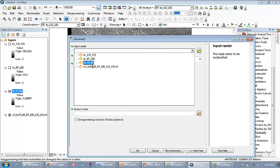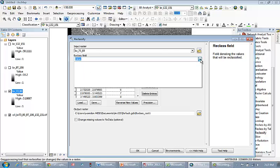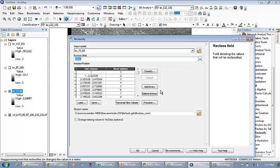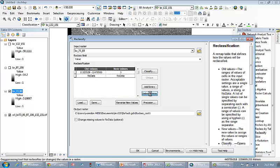Input raster is going to be the 7380. The reclass field is going to be value. That's our only choice. Now initially it's giving me a lot of different choices depending on how many new values I want to have in my reclassified raster. I only want to have three. So I'm actually going to hold shift and highlight those and then hit delete.